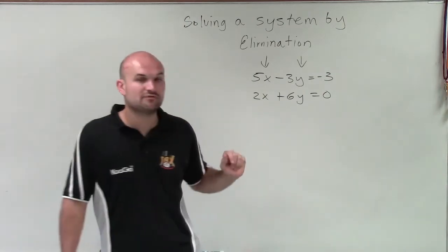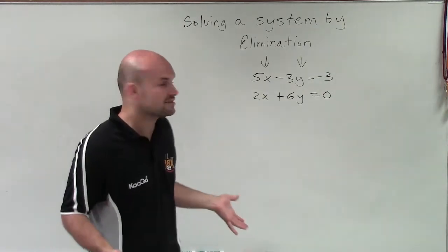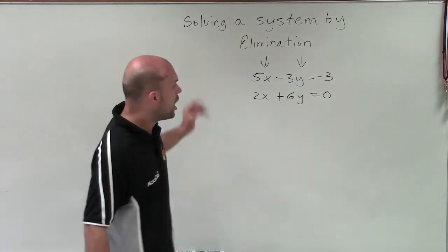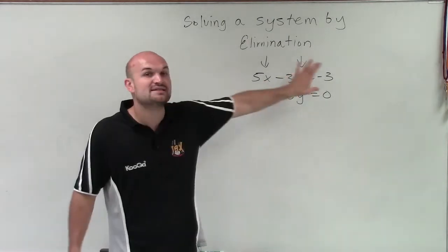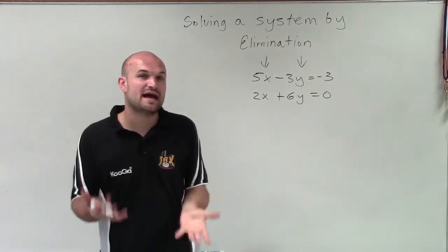However, between negative 3 and 6, my least common multiple is 6, right? So all I would need to do is only multiply my top equation by a multiplier to have the least common multiple.